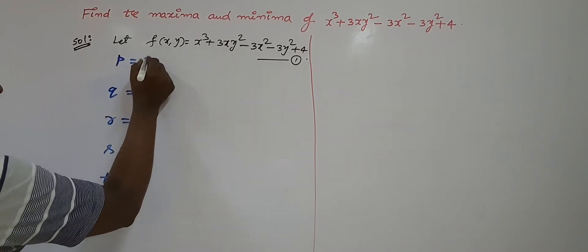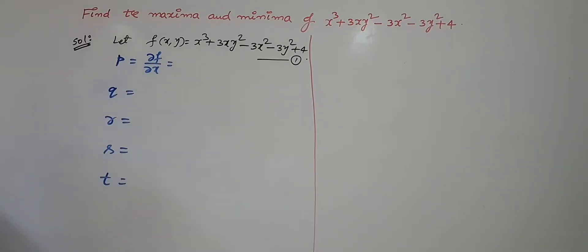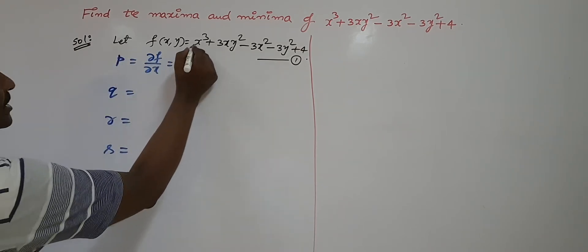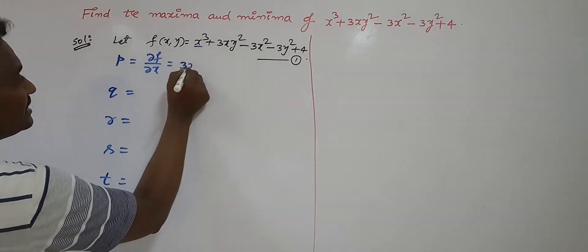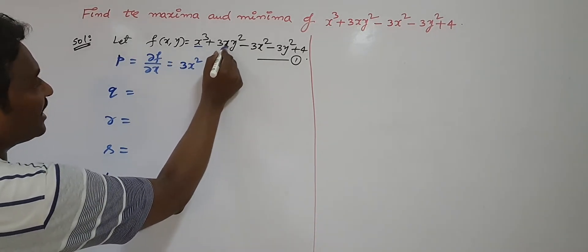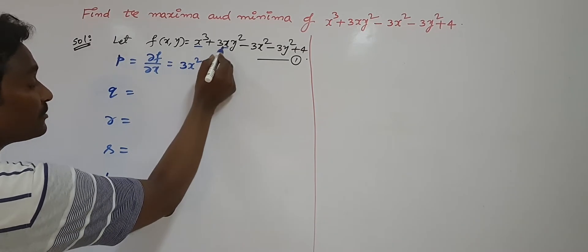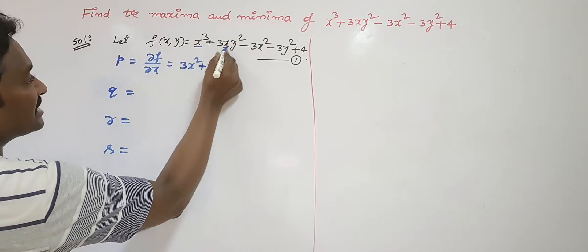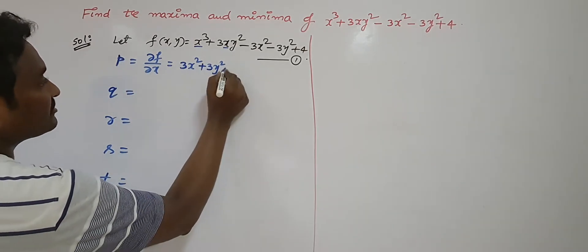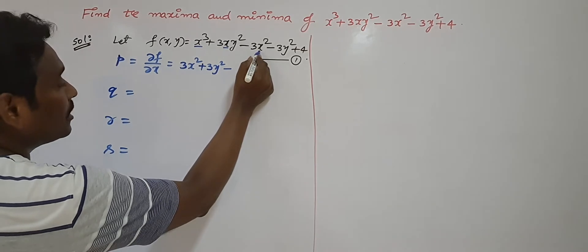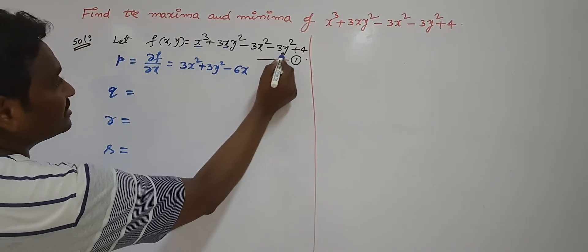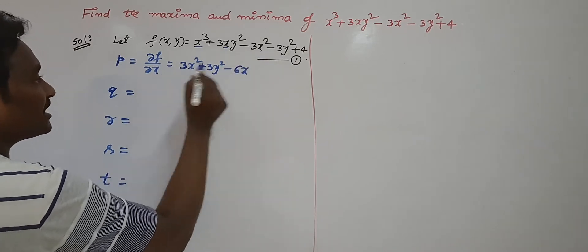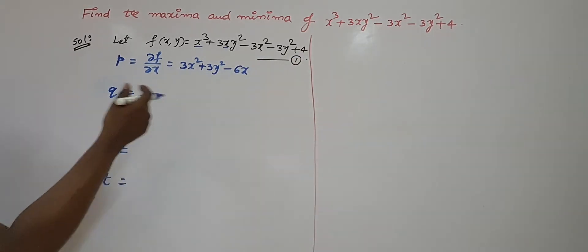What is p? p = ∂f/∂x. In this case, except x, the remaining terms are all constants. So take the derivative with respect to x only. Derivative of x³ with respect to x is 3x². The term 3y² is a constant in product, so write 3y² as usual — derivative of x is 1, giving 3y². Then -3x²: its derivative is -6x. The term -3y² is entirely in y, so its partial derivative with respect to x is 0. The constant 4 also gives 0.